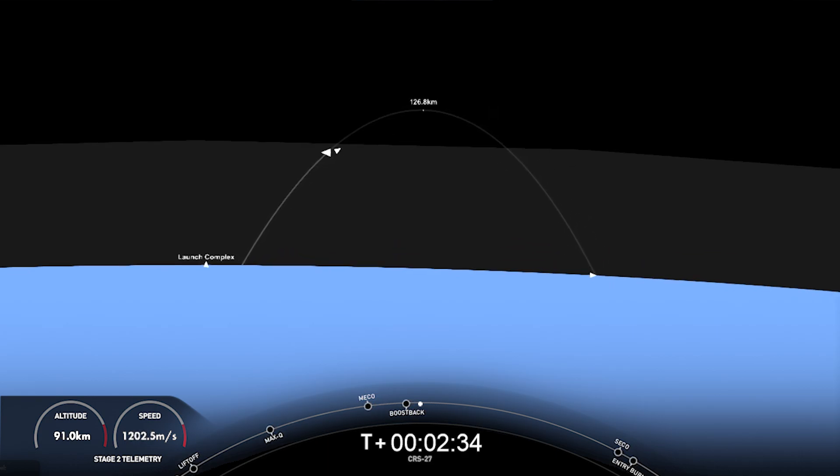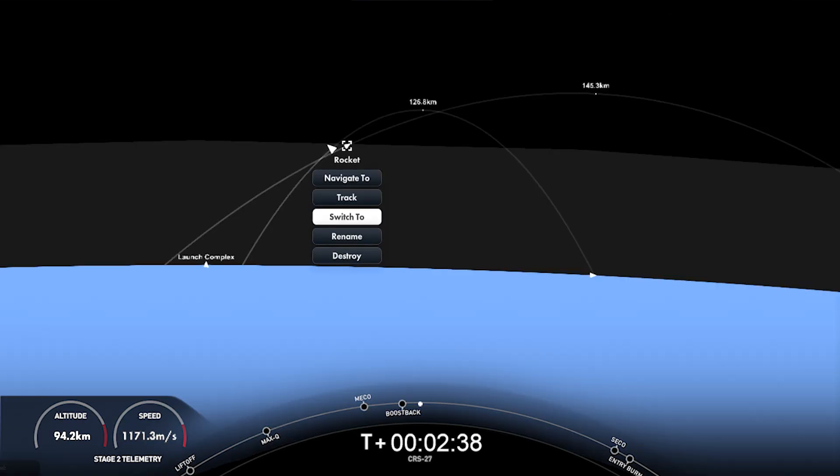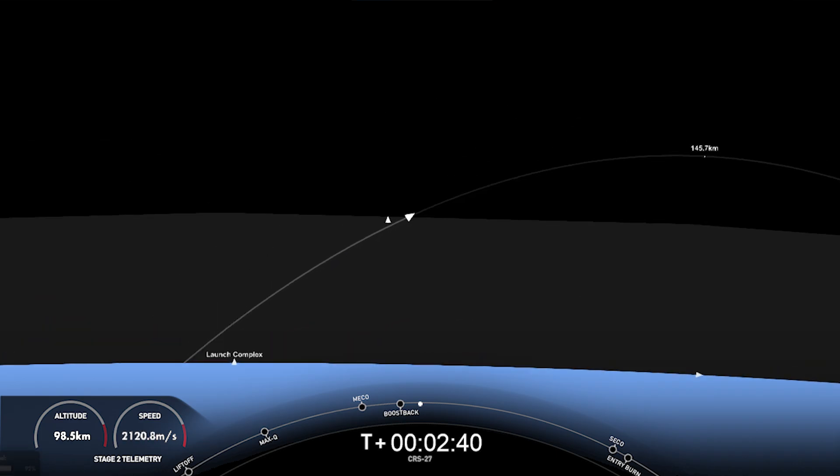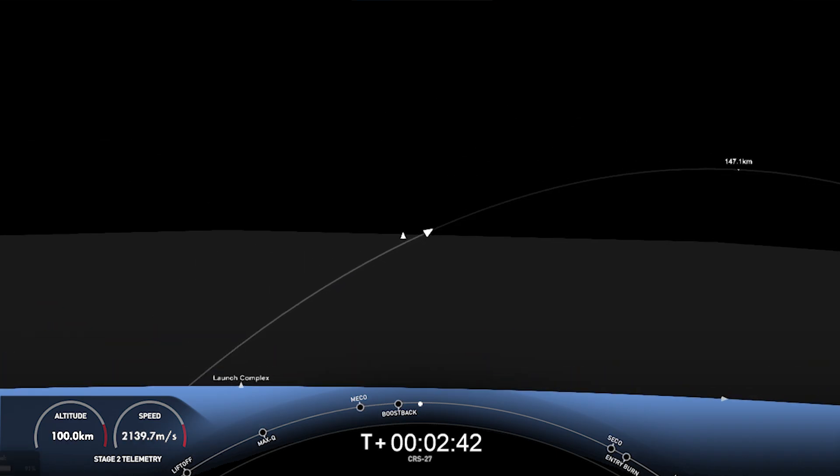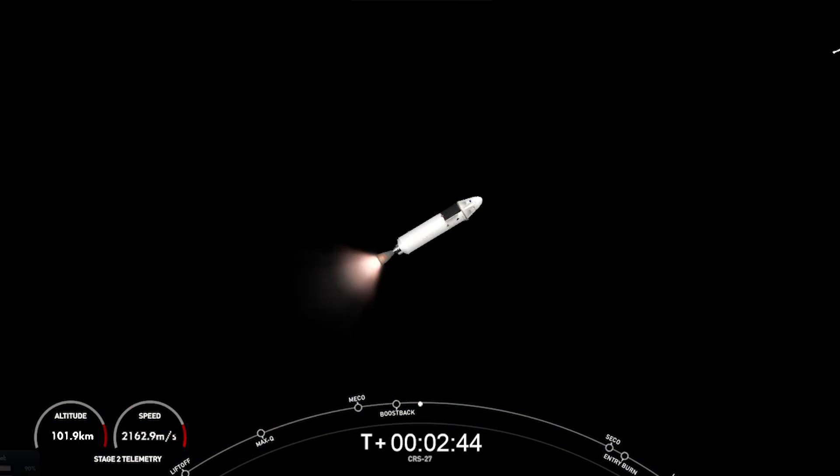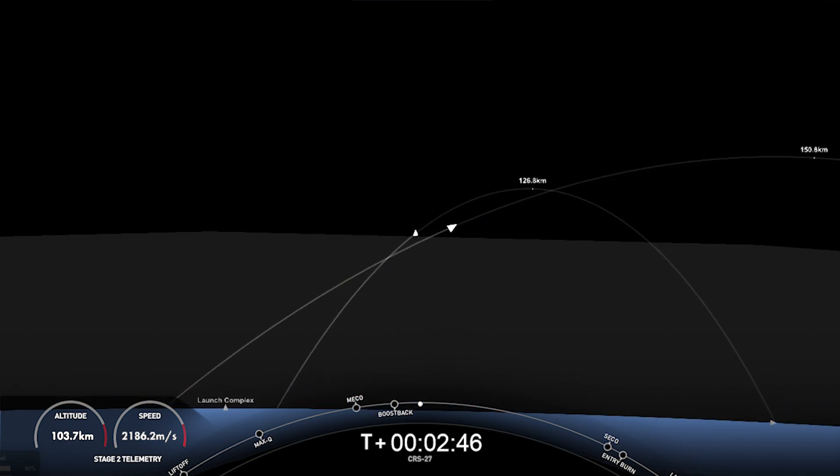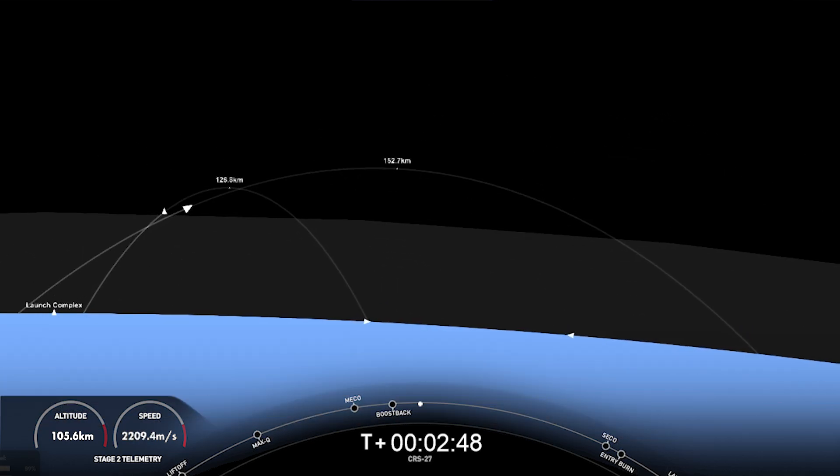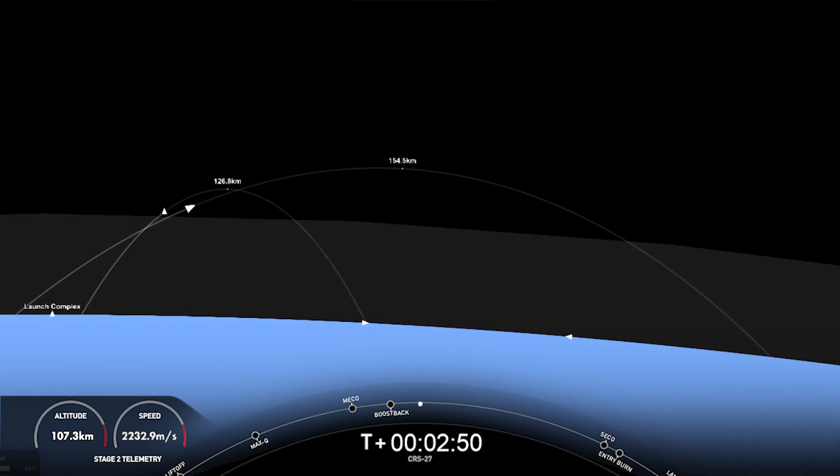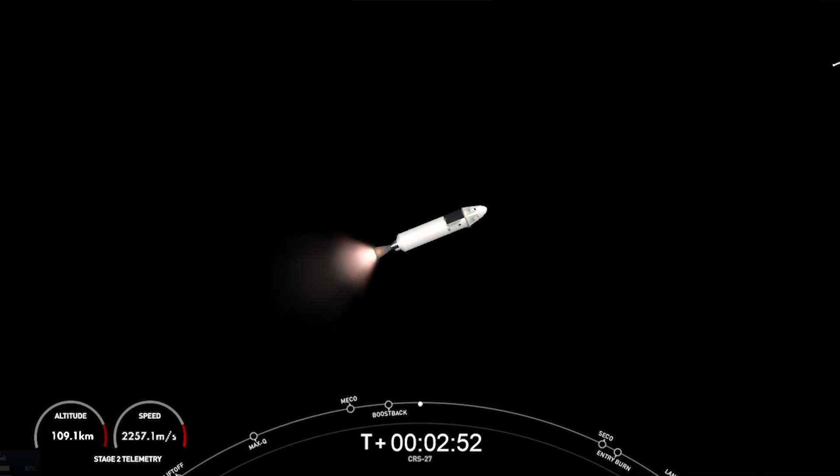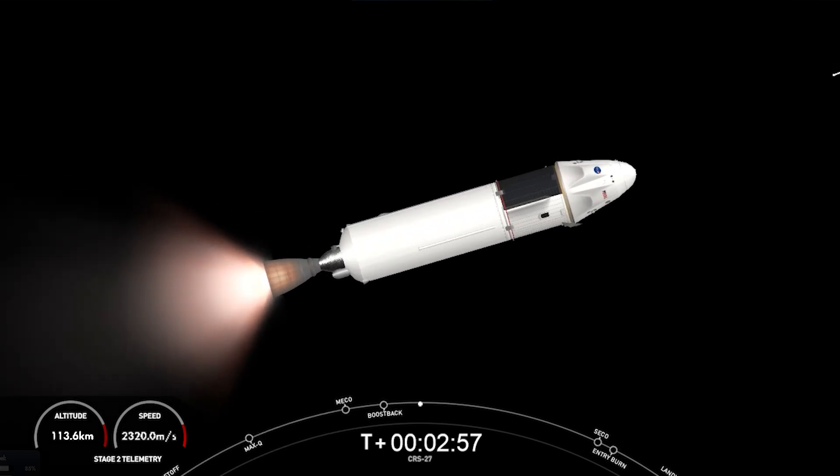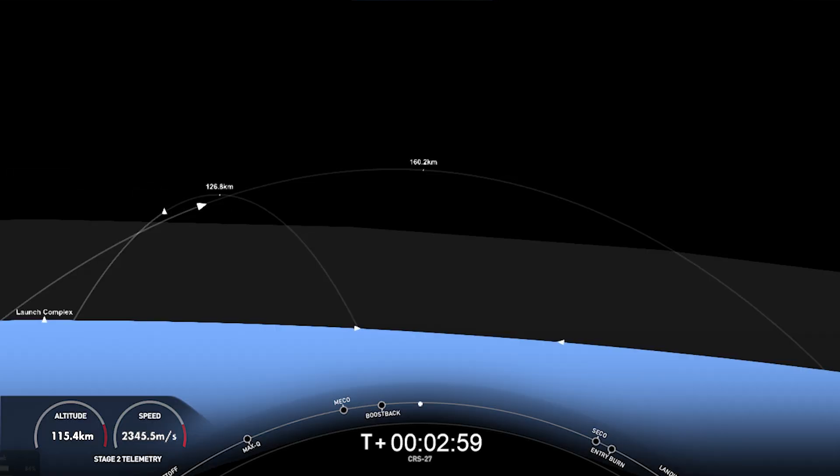While a boostback burn is normally performed in order to return the first stage to one of our landing zones, here we are just performing a partial boostback. This shortened burn, possible due to payload weight, will allow us to recover the Falcon 9 booster much closer to the coast and shorten the drone ship's journey back to shore by about one and a half to two days. Stage 1 boostback shutdown. And there's confirmation of boostback shutdown.